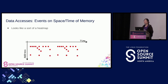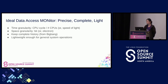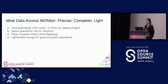What are data accesses? Those can be thought of as events on the space and time of memory — some event of memory access, at some time, somewhere — and therefore it would look like a sort of heat map. An ideal data access monitor would monitor access in a precise, complete, and lightweight manner. The time granularity would be as short as possible — perhaps CPU cycle divided by number of CPUs, or even the speed of light.